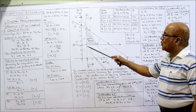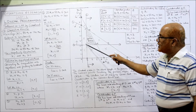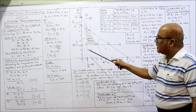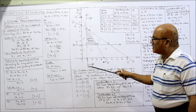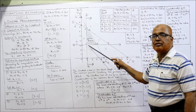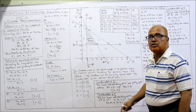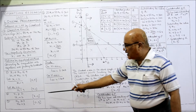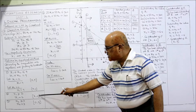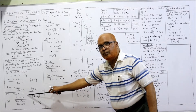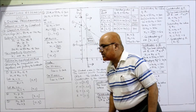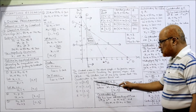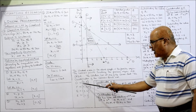At corner point O, lines 2 and 3 are intersecting. The second constraint is x1 = 2 and the third is x2 = 3. So the coordinates of O are (2, 3).